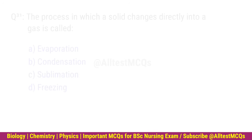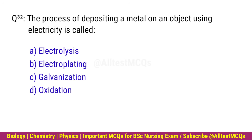Q32. The process of depositing a metal on an object using electricity is called? Correct option is B. Electroplating.